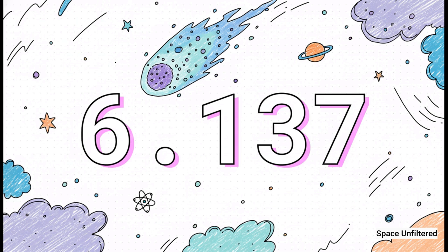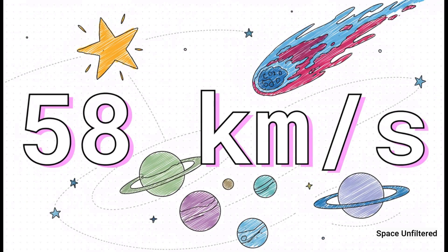A typical elliptical orbit is between zero and one. Any value greater than one defines an unbound hyperbolic path. 3I Atlas has an eccentricity of over six, an extreme value that leaves absolutely no doubt about its unbound nature.